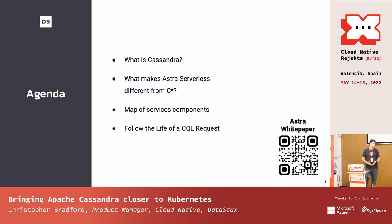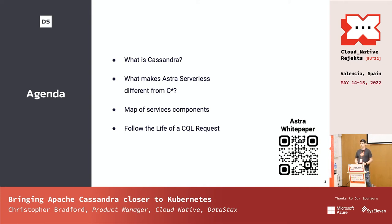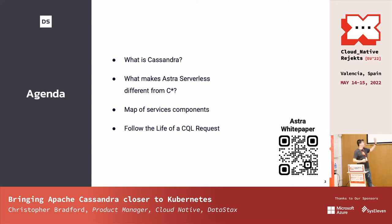So what are we going to talk about today? First, I'm going to give a quick intro to Apache Cassandra — what it does, how queries come in, and the highlights of why Cassandra is an interesting database. Then we're going to talk about Astra Serverless, which is a version of Cassandra we've developed to run cloud-natively. We'll map out how those components all relate to each other. And finally, we're going to look at the life cycle of what we call a CQL request — CQL is the Cassandra query language, think of it like SQL. I have a QR code here for the Astra white paper; it goes into a lot more detail and has some really cool diagrams. I highly recommend you check that out.